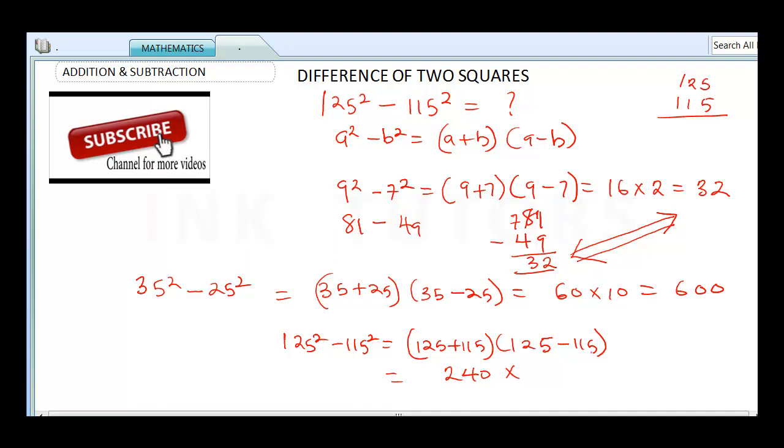Then times 125 minus 115 is going to give us 10. When you multiply both of them, it's going to give you 2,400.